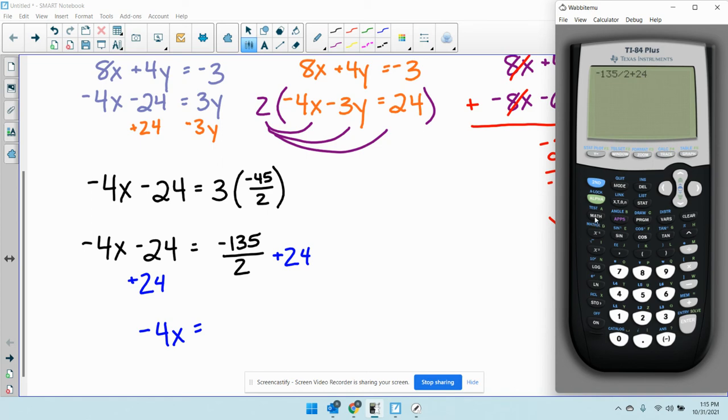So what I'm going to do is just do negative 135 divided by 2 plus 24. And then I'm going to hit math. I'm going to hit fraction. Enter one more time. I get negative 87.